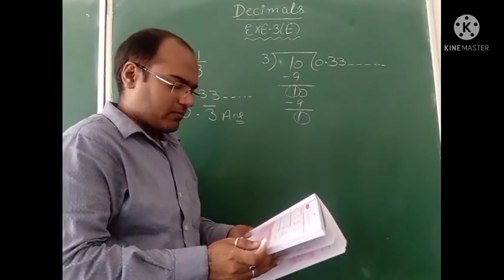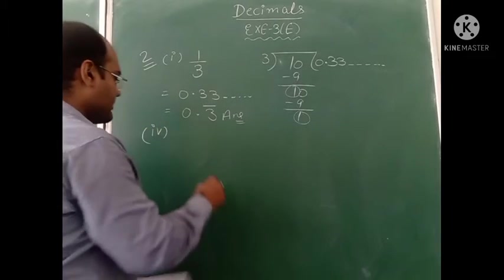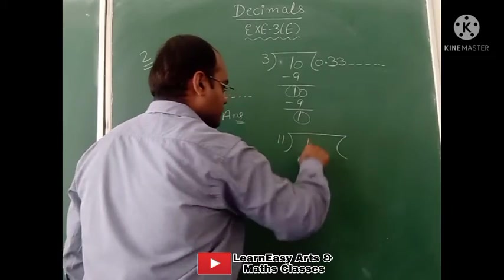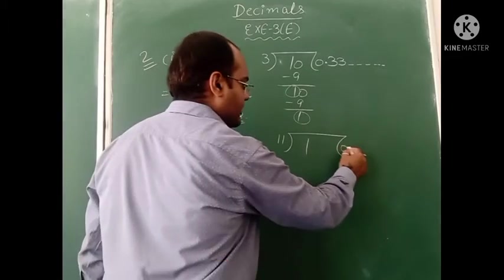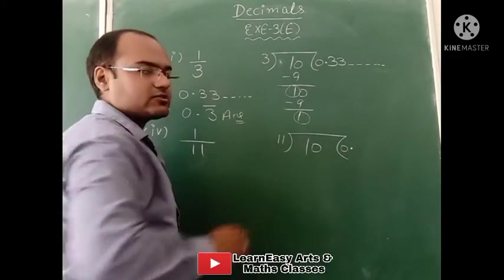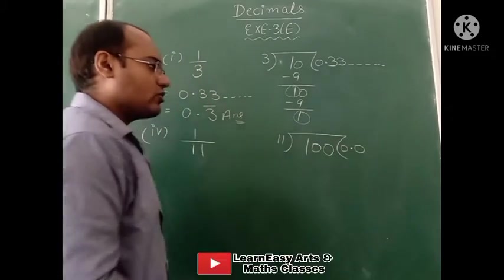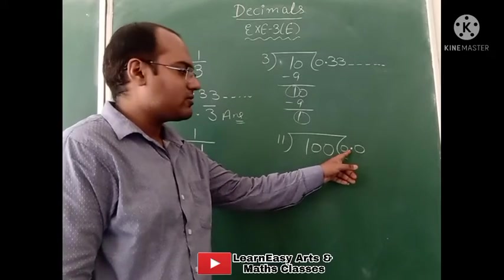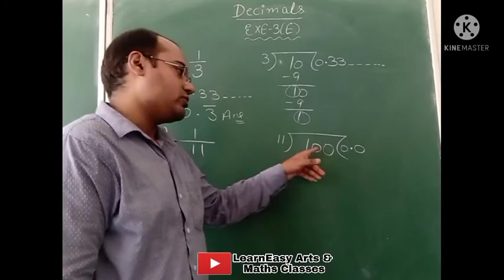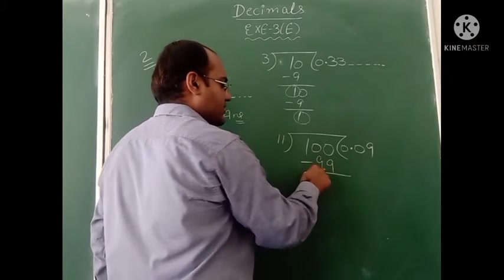Now see part number 4: 1 divided by 11. We divide with a table of 11. 1 is not divisible by 11, so we take decimal in the answer and add 0. This is 10. 10 is not divisible by 11, so we add 0 in the answer and one more 0 here. Now this is 100. 11 times 9 is 99. On subtracting, remainder is 1.